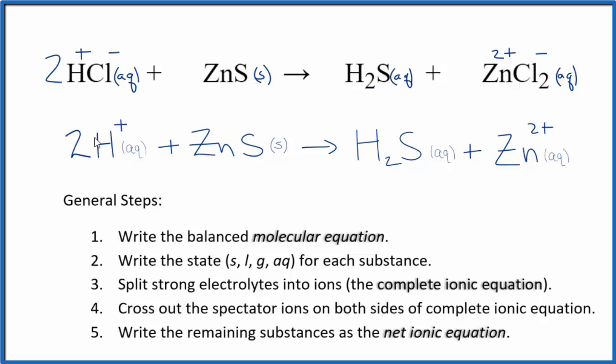You'll note charge is balanced. We have 2 times 1 plus, so we have 2 plus here. And then on this side, we have a 2 plus. Charge is balanced. Count the atoms up. They're balanced as well.